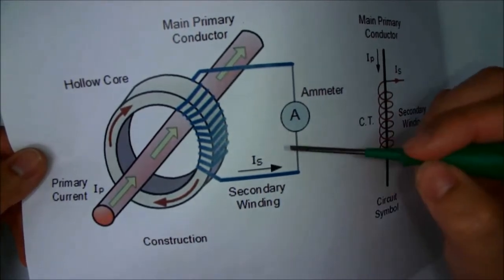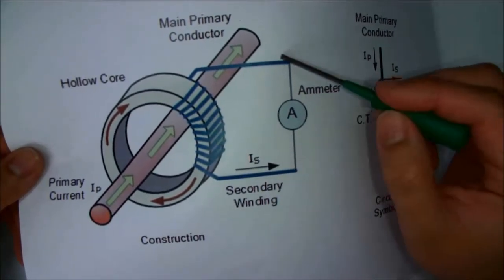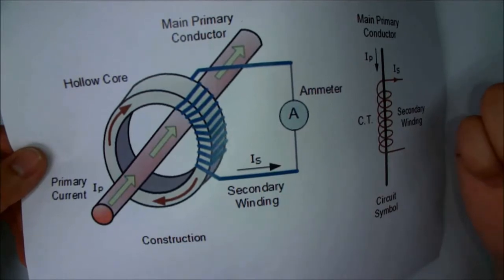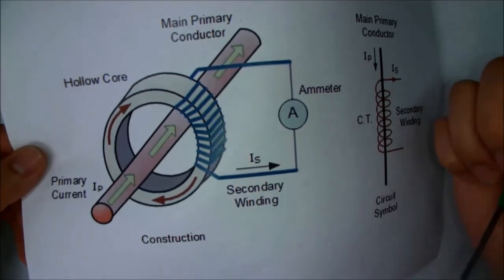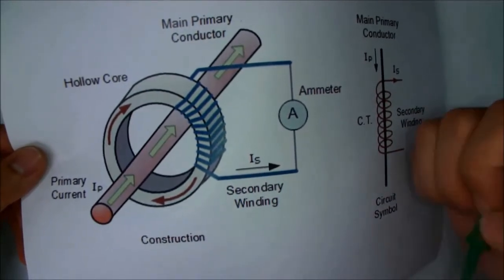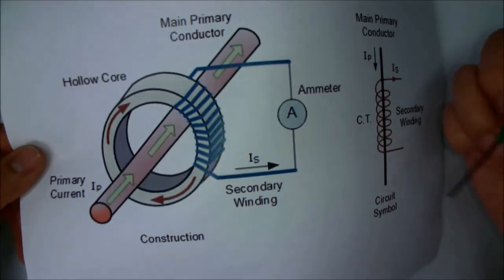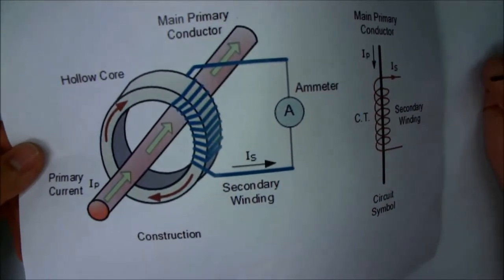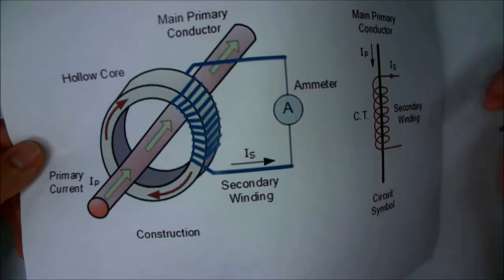So by shorting the CT, we are connecting these two wires together and the resistance becomes finite or a very small value, which then reduces the voltage to a very low value. This is why you always short the CT before installation or any risk of having an open circuit.